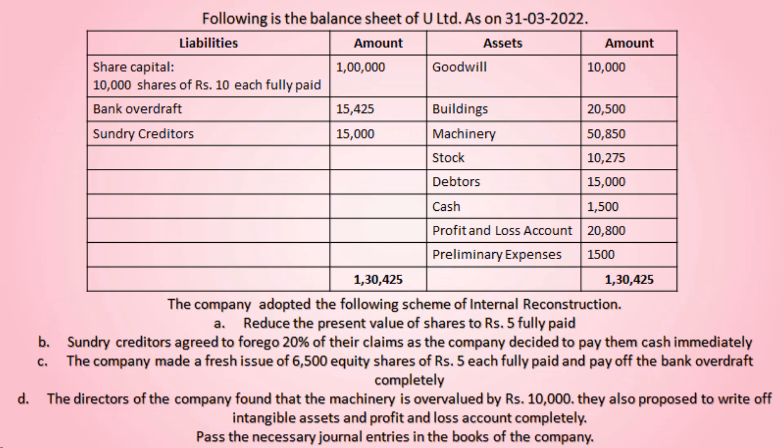The following is the balance sheet of U-Limited. They have given the balance sheet of U-Limited company, which has some liabilities and assets. If you observe the asset side, the profit and loss account has come on the asset side, which means it is a loss.